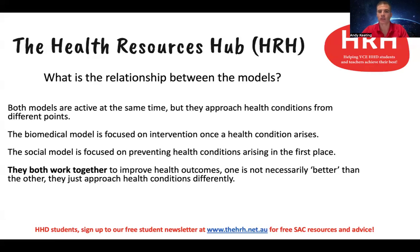The biomedical model is focused on intervention once a health condition arises. Think about a hospital where a person turns up when they're ill and might have diagnosis via x-ray or MRI, then some form of treatment — because a health condition has arisen. Whereas the social model is focused on preventing health conditions arising in the first place. While hospitals are available, there's also a range of things like health promotion campaigns the government might run on TV, encouraging people to be more physically active or not to smoke — trying to get people engaging in behaviors likely to reduce the risk of health conditions arising.